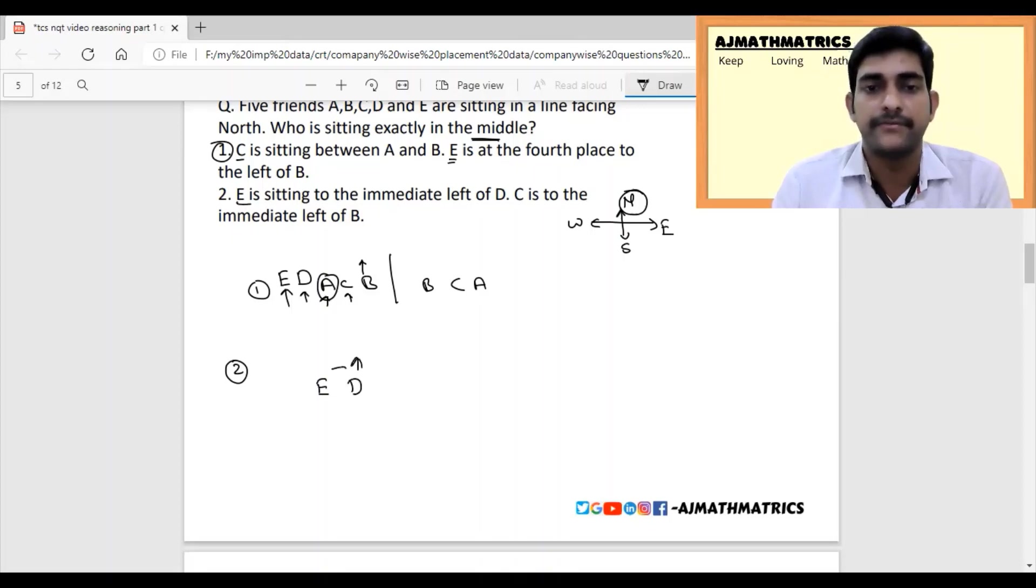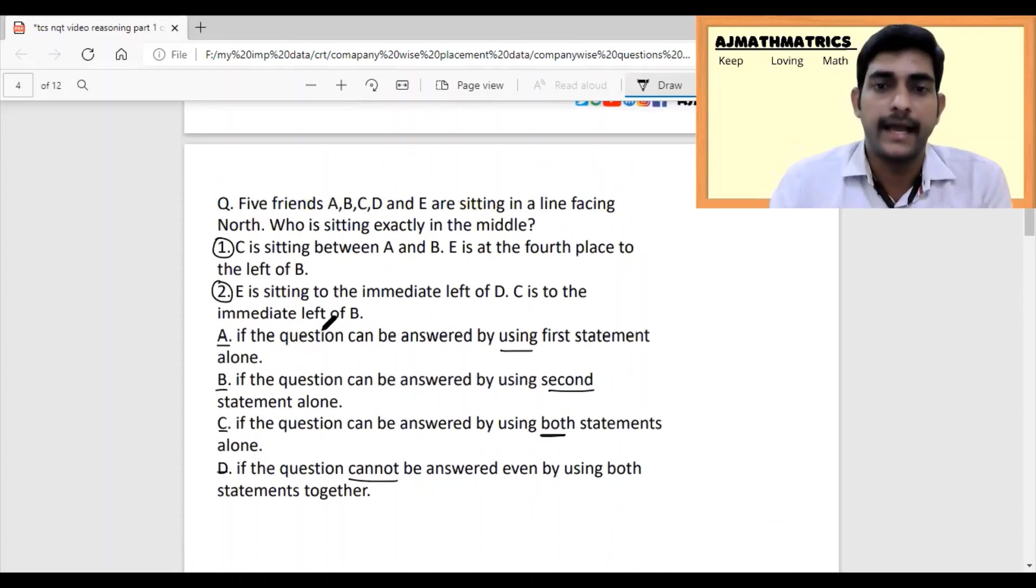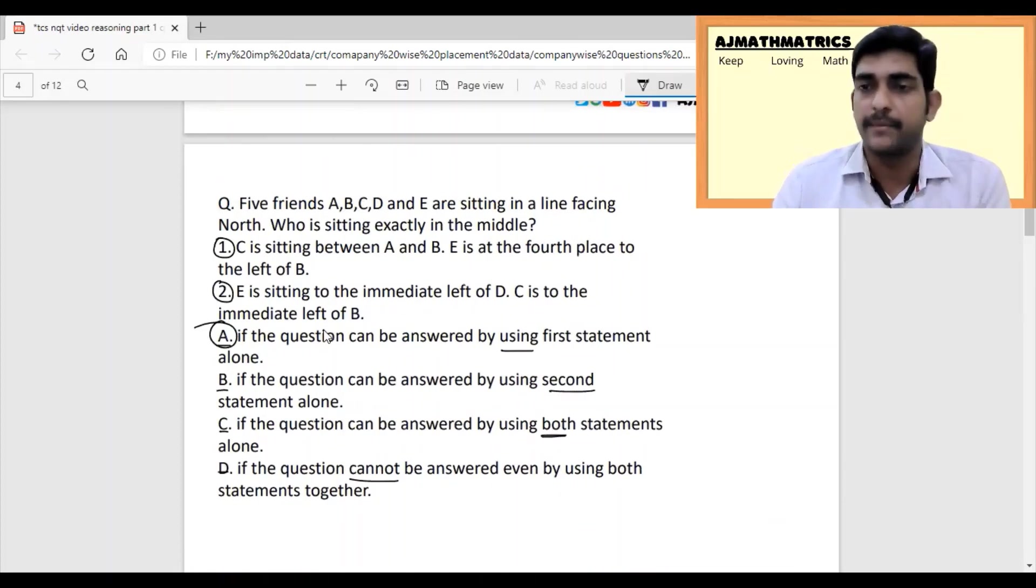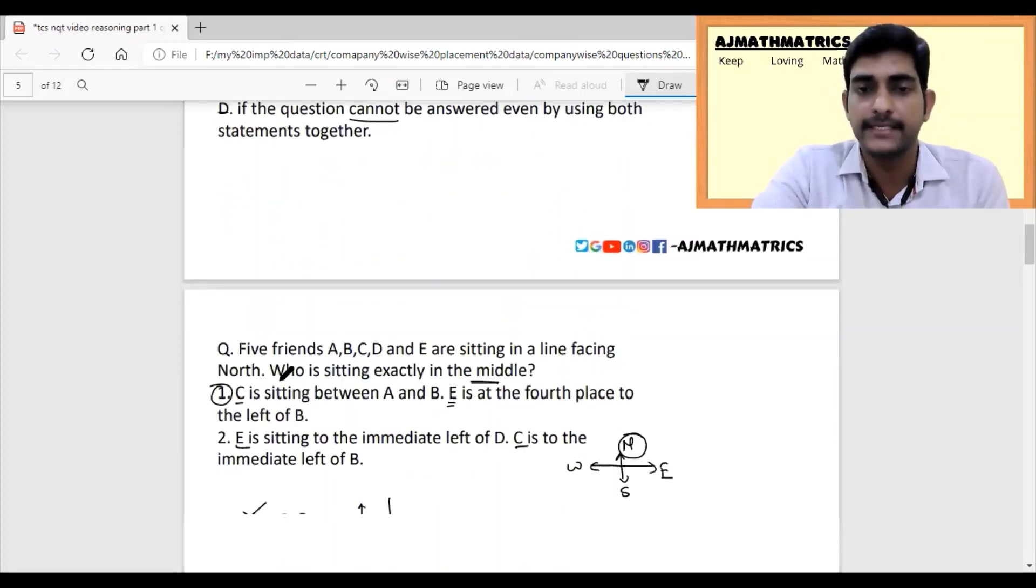The arrangement can be solved with the first statement alone. A is sitting in the middle. By doing one statement, don't decide the answer yet. Statement 2: E is sitting immediate left of D, and C is sitting left of B, but there's no clarity about A's position. So two alone is not sufficient, only one is sufficient. The answer is A - the question can be solved using the first statement alone.